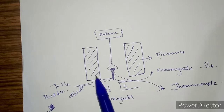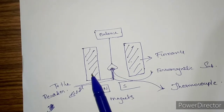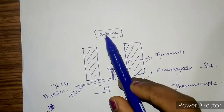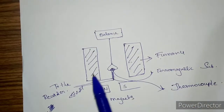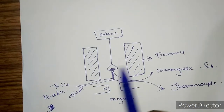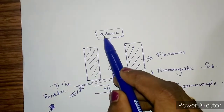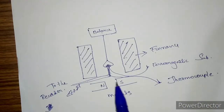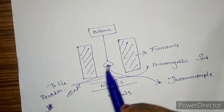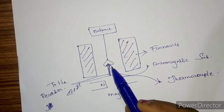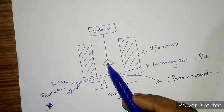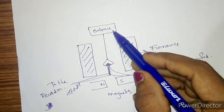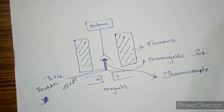Without applying the temperature, that is at room temperature, you have to measure the weight through the balance. The weight will be obviously high. Why? Because we are keeping the magnet here and this is a ferromagnetic material, so there will be an attraction between the ferromagnetic material and the magnets. The weight obtained will therefore be very large — higher than the actual weight. That is noted down.